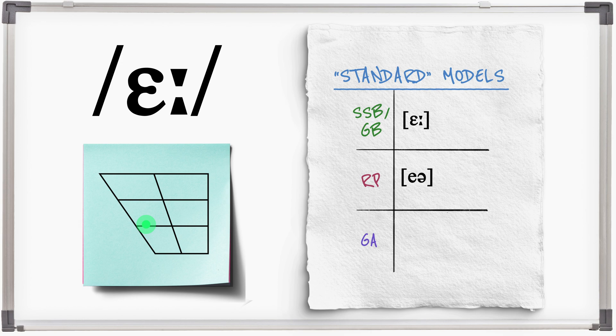The RP pronunciation is diphthongal, starting at the front with a more close jaw and moving to the centre. Air, bear.